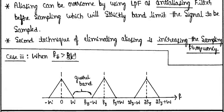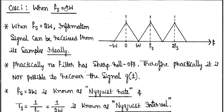For example, if your message signal is 15 hertz, you should set a sampling frequency of at least 30 hertz, or even 40 or 50 hertz. The higher the sampling frequency, the better the signal recovery, because when you apply a low-pass filter to recover the original message signal, the recovery will be very smooth.